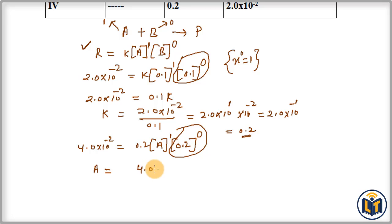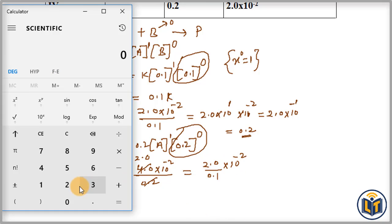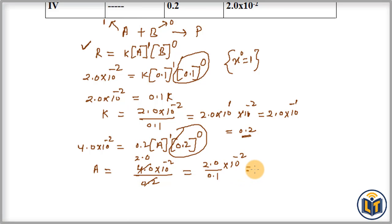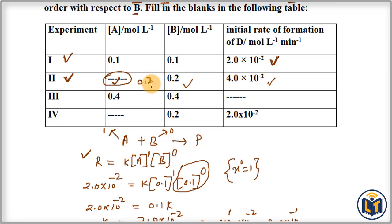Solving: A = 4.0 × 10⁻² / 0.2. We get 2.0 / 0.1 = 20, so A = 20 × 10⁻² = 0.2. The concentration of reactant A for the second experiment is 0.2 mol/L (molarity).